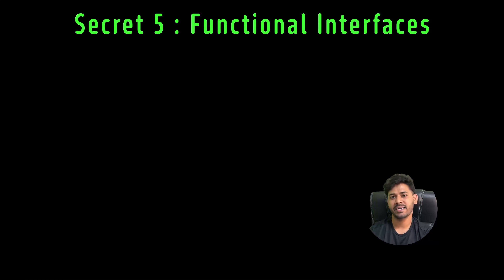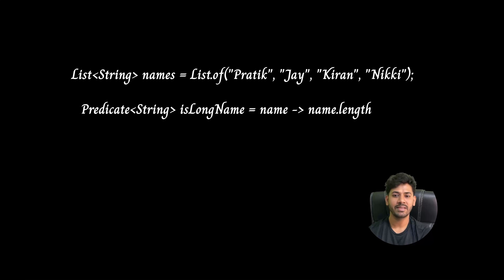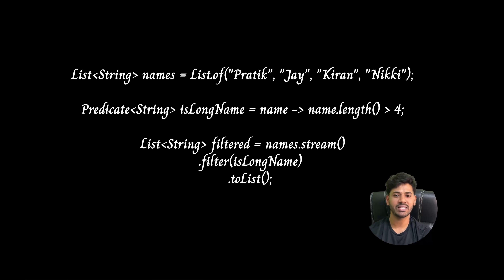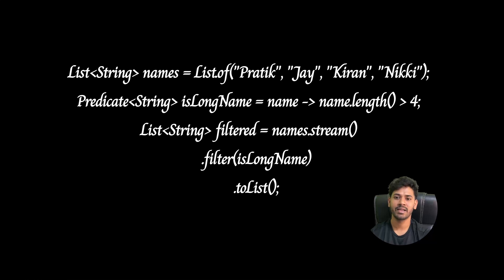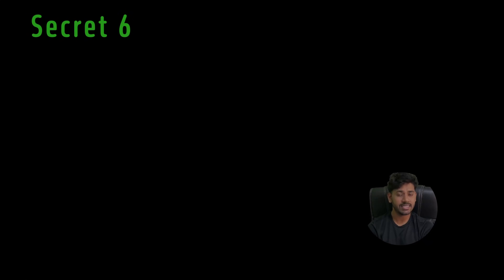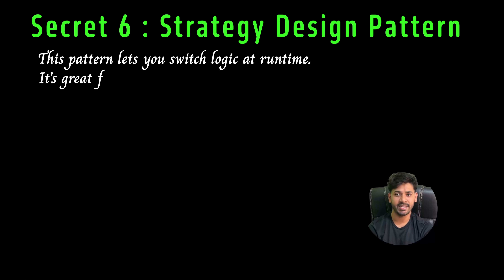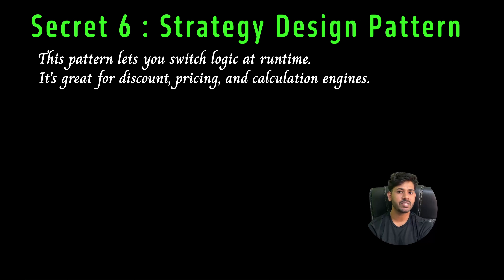Secret five: Functional interfaces — logic as data. Functional interfaces like Predicate and Function let you pass logic as a parameter. For example, with a list of name strings, define a predicate isLongName that checks if the name length is greater than a threshold. Then call names.stream().filter(isLongName).toList() to get the filtered result.